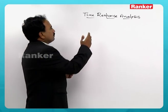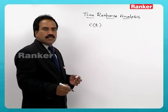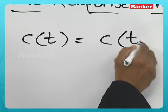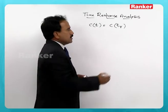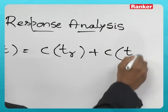The time response is given by c of t, and this is given by c of t transient plus c of t steady state.